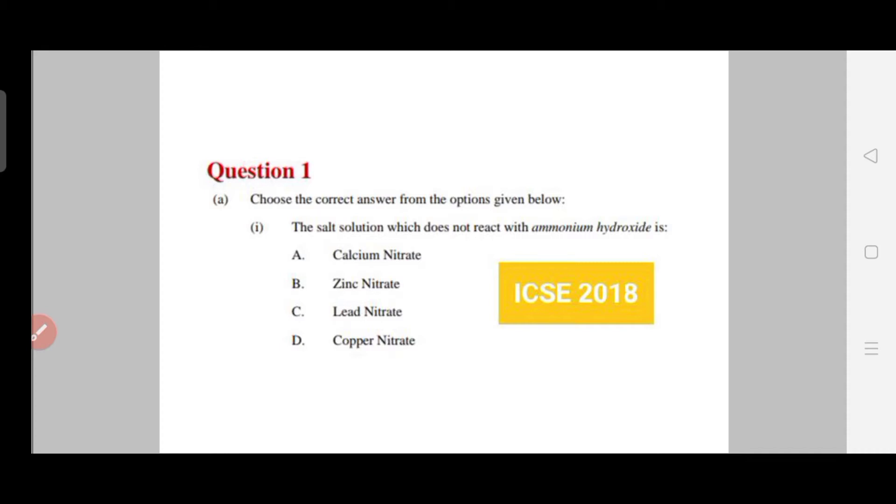Now let me start with the different question types. The first question type is the simple question type which comes in this question. You can clearly see that there is one question for which you have been provided with four options. The question is: the salt solution which does not react with ammonium hydroxide. So if you know and if you have done all that column which I have told you, then you can definitely answer this type of question and you can get questions like what color will you get if this reacts with this from this chapter. This is an ICSE 2018 question.